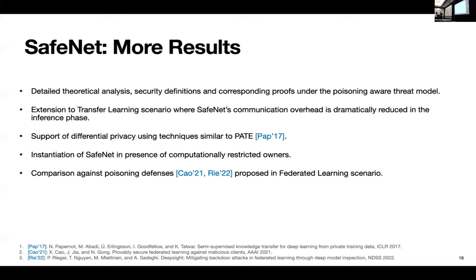So we have more results in our paper as well, out of which some of them which are pretty interesting to me is the analysis that we do for our framework and the security definitions and proofs that we have there. Given that we combine two threat models together, we need to make sure that it works in both paradigms. Next, we have also an extension to transfer learning scenario where we are able to remove one of the limitations of the inference overhead that we have there. And thirdly, we also show support for differential privacy using techniques similar to PATE.